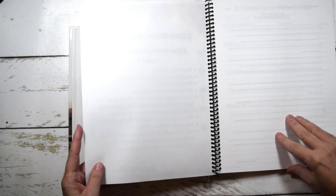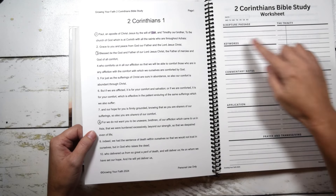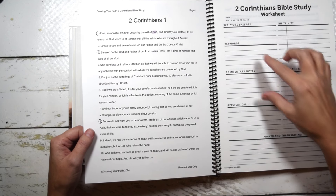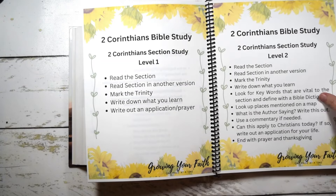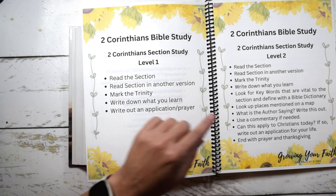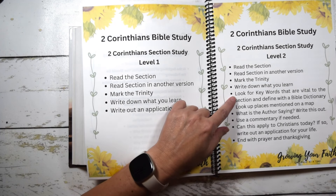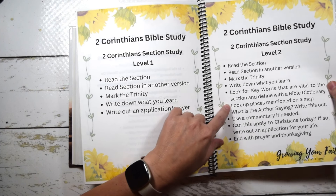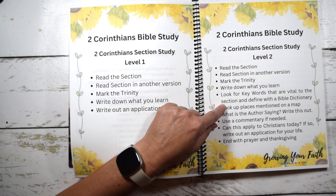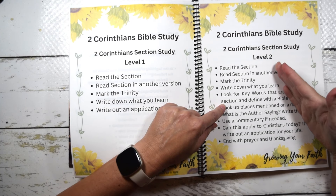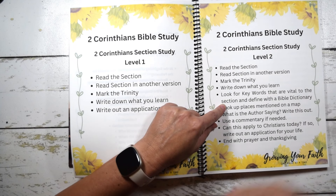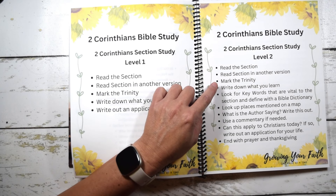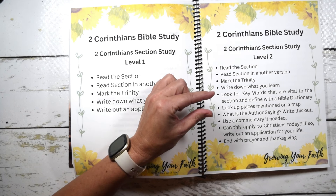There is space for those things on the worksheet. Here's your scripture passage, here's where you write about the Trinity, and here's your application and prayer. You don't have to fill every box. For Level 2, we're going to do all of that and then keep going. You'll look for keywords that are vital to the section and define them using a Bible dictionary — you can do this online at something like Blue Letter Bible, or use a physical Bible dictionary. It needs to be a Bible dictionary specifically, because words were defined differently back then than they are today.